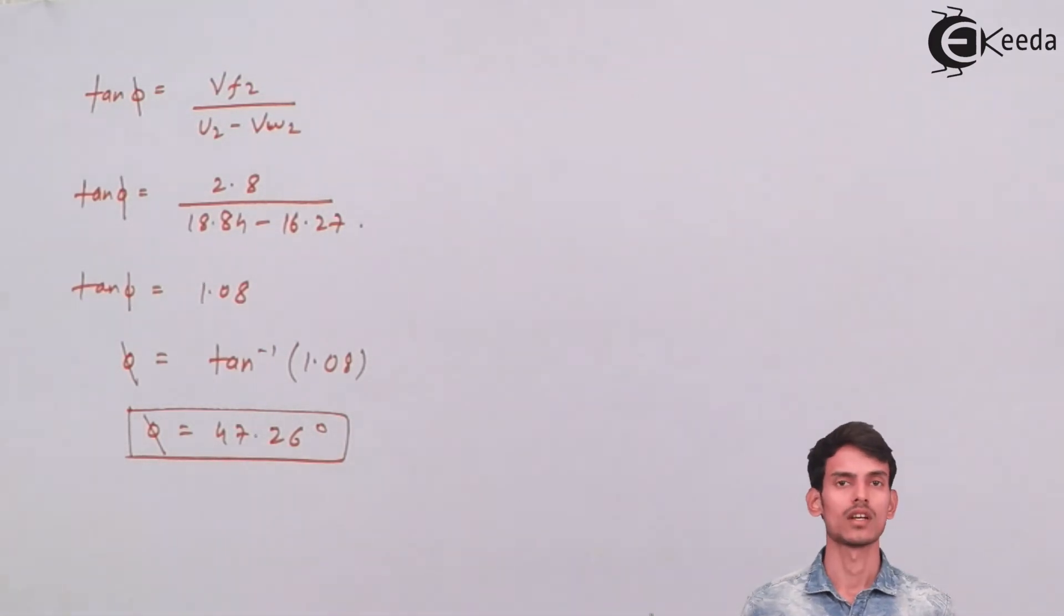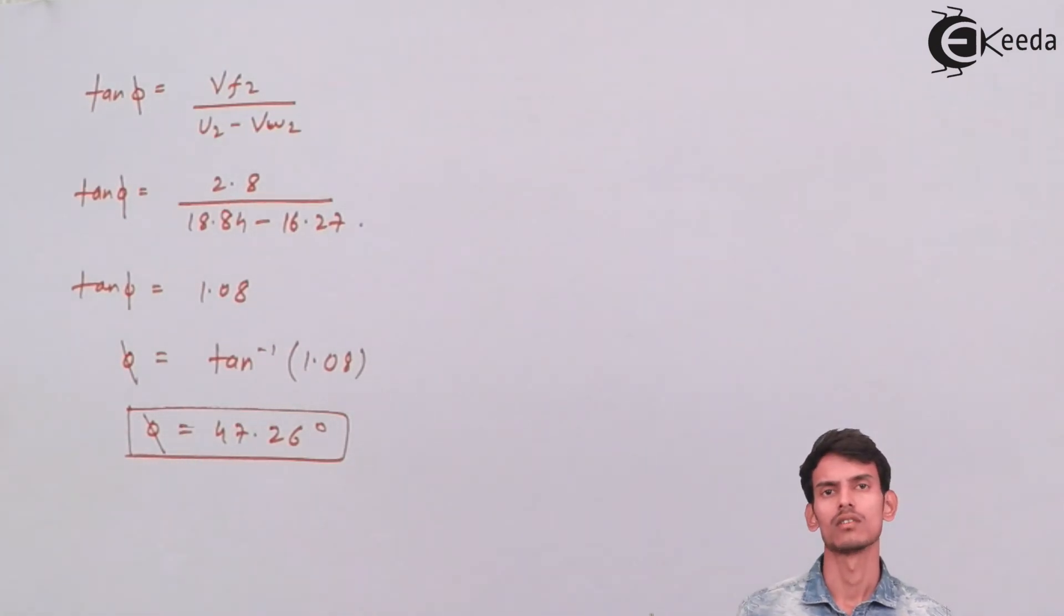That is the vane angle at the outlet side. That was all about this question. We easily got the value using trigonometric functions and basic knowledge about centrifugal pumps. I hope you've understood it. Thank you.